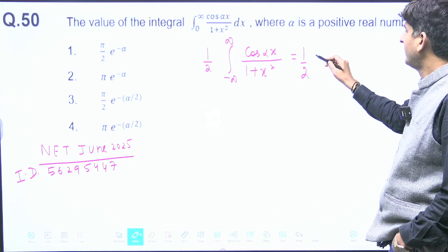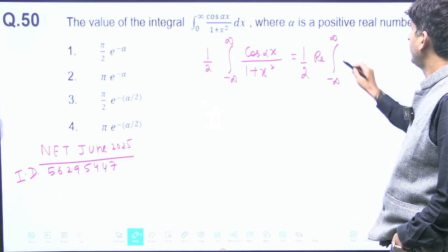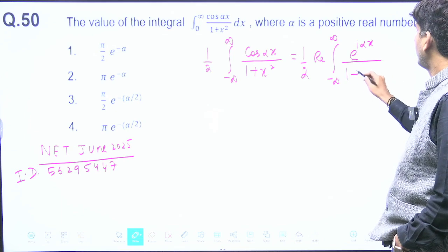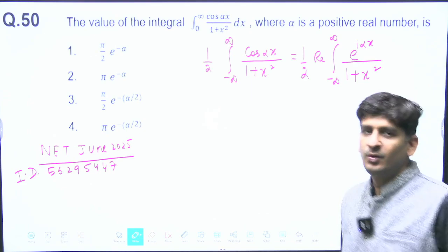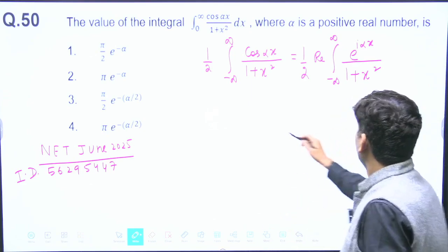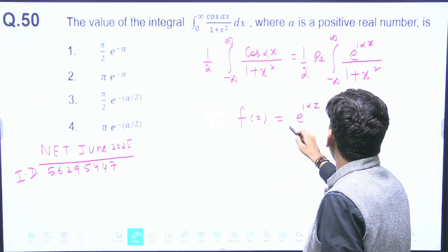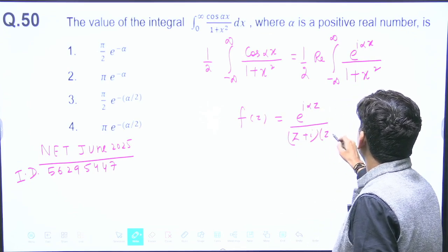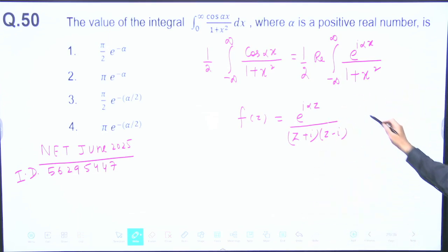Now you know how to handle such questions. Your f(z) will become e^(i*alpha*z) / (z² + 1), which is e^(i*alpha*z) / [(z + i)(z - i)]. This is the factorization of z² + 1 in the denominator: z plus i and z minus i.